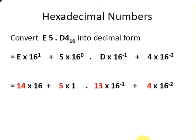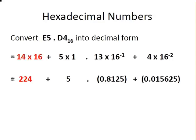Now we're going to simplify each of these expressions. 14 by 16, that's equal to 224. 5 by 1 is simply 5.